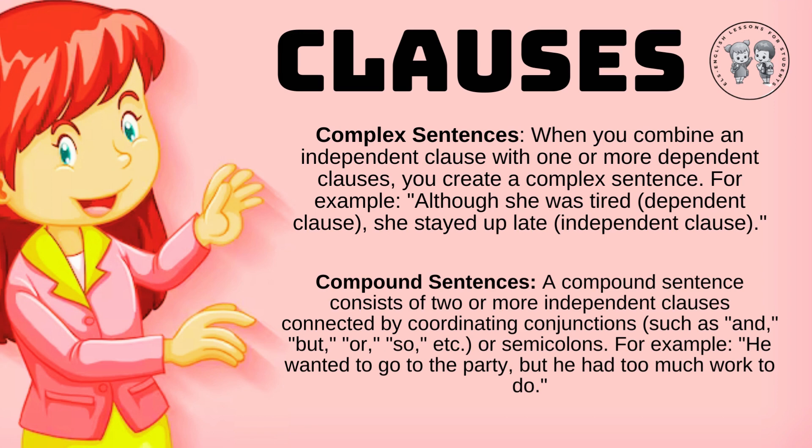Compound sentences. A compound sentence consists of two or more independent clauses connected by coordinating conjunctions, such as and, but, or, so, etc., or semicolons. For example: He wanted to go to the party, but he had too much work to do.